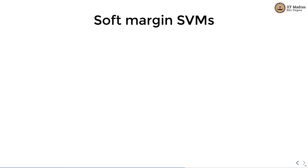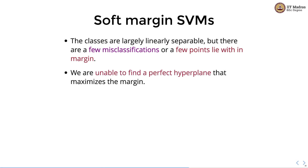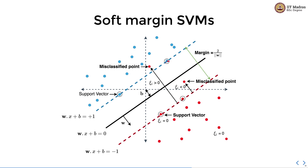Namaste, welcome to the next video of the machine learning techniques course. In this video we'll discuss soft margin SVMs. There are situations where classes are largely linearly separable but there are a few misclassifications or a few points that lie within the margin. In such cases we are unable to find a perfect hyperplane that maximizes the margin, so we would like to make some adjustments to the loss function to learn a hyperplane with tolerance to a small number of misclassified examples.